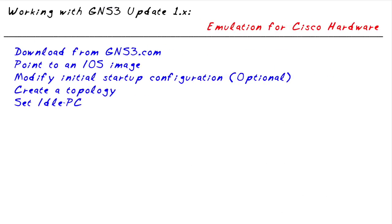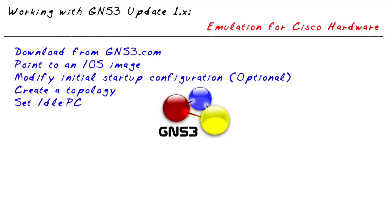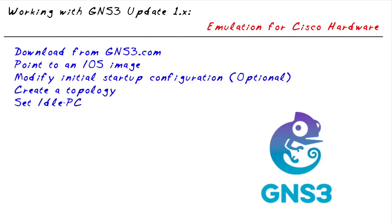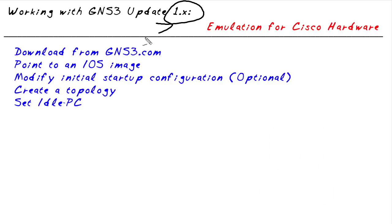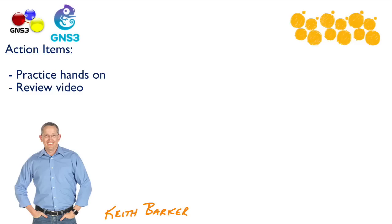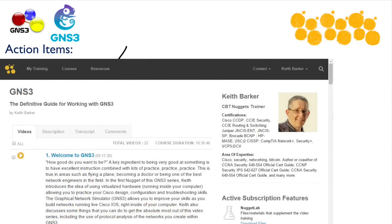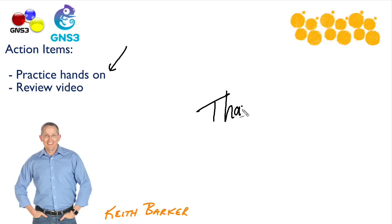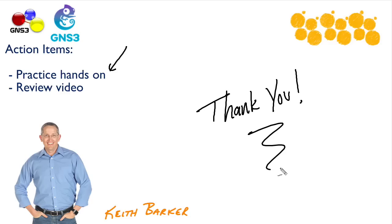In this nugget, we've taken a look at how we can take all of our knowledge from previous versions of GNS3 — such as version .8 — and apply those same skills with a few tweaks regarding where things are located in the new and updated version 1.x of GNS3. I would strongly recommend that you start using and practicing with the updated version. If you're looking for more information and training on how to use GNS3 in general, check out the other nuggets in our GNS3 course at cbtnuggets.com. I hope this has been informative for you, and I'd like to thank you for viewing.